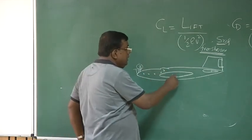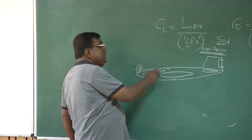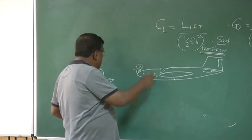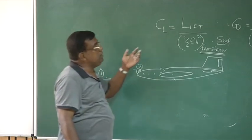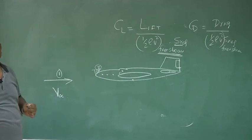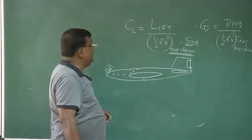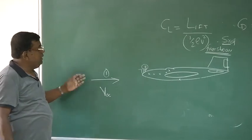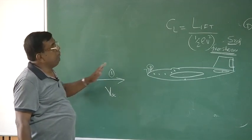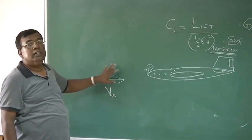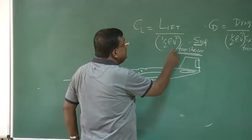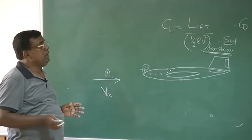That is why we take the free stream velocity — the understanding is that it is very far away from the body, so there is no influence on the speed of the free stream and it remains constant. That is why we talk about free stream, so that we can define a non-dimensional quantity consistently.